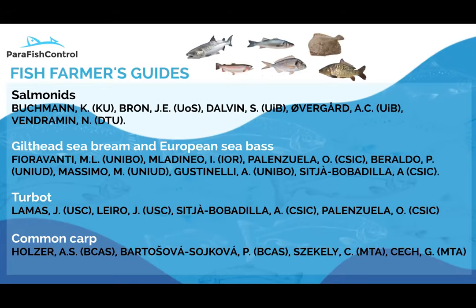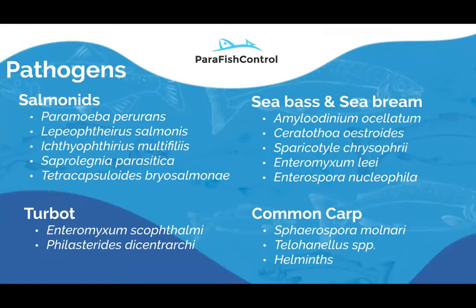It was challenging to distill this information into a simple two-page guide per parasite. Each guide will include the following pathogens: for salmonids — AGD, sea lice, IHN, Saprolegnia, and Tetracapsuloides for PKD. For sea bass and sea bream — Sparicotyle, Amyloodinium, Enteromyxum, and Nucleospora. For turbot — Enteromyxum scophthalmi, Philasterides, and Centrocestus. For common carp — Sphaerospora molnari, Thelohanellus, Loma, and some helminths.